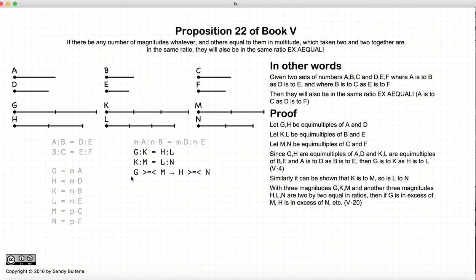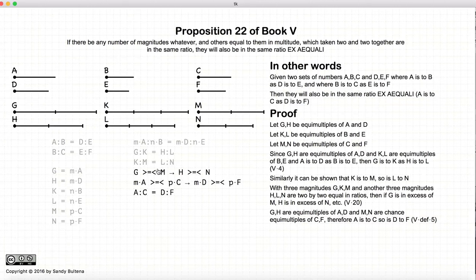Now G, of course, is equal to M A, M is equal to P C, H is M D, and N is P F. And if we recall from Definition 5, we have some multiple times A, where it's greater than, less than, or equal to another multiple of C, implies that the first multiple M times D would be greater, equal, or less than P times F. This is the definition of two ratios being equal.